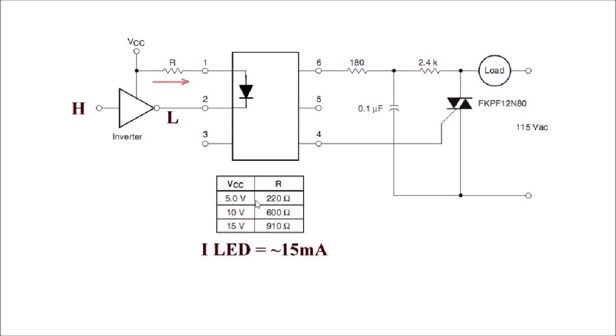Now the obvious solution is if you're building this yourself and it's going to have one input voltage, you could always just use a dropping resistor. The higher the voltage, the higher the value of the dropping resistor. So at 5 volts it's 220 ohms, 10 volts it's 600 ohms, 15 volts is 910. This gives you an LED current of approximately 15 milliamps plus or minus one or two milliamps.